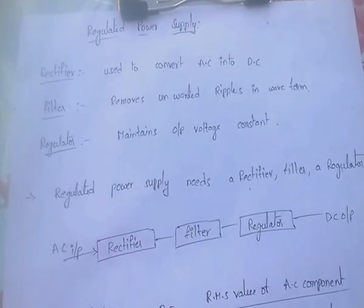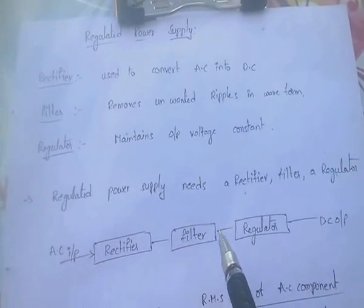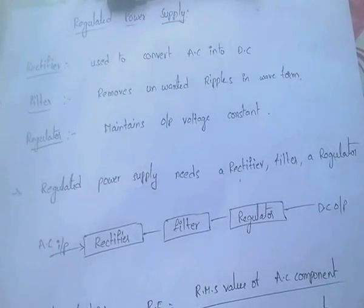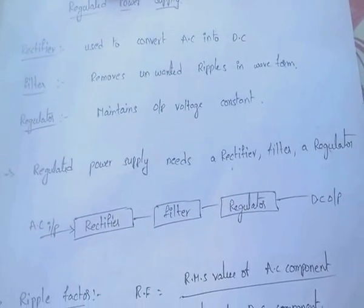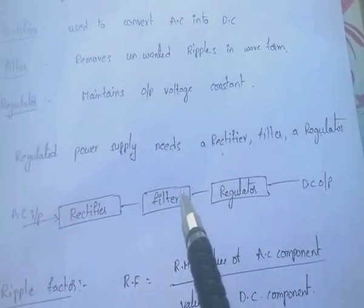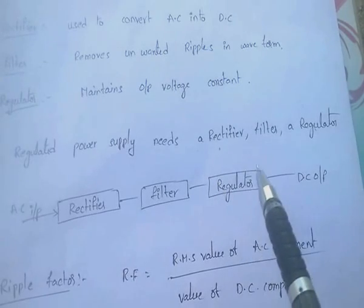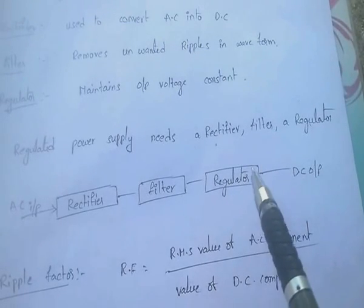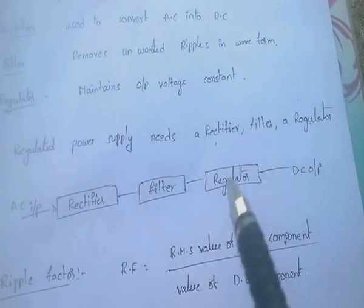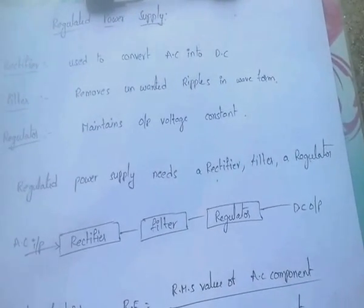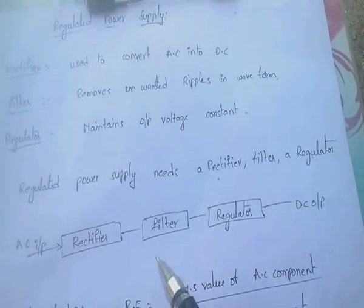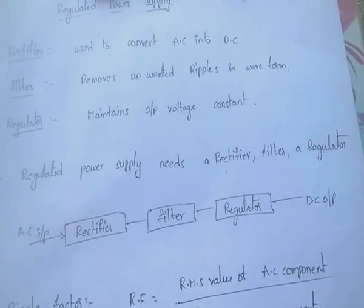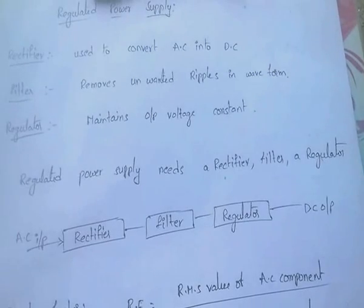The DC output is fed to the filter. The filter is a circuit which removes unwanted ripples in the waveform. The output of the filter is fed to the regulator. The regulator maintains voltage as constant. So if we give AC input to the regulated power supply, the output is constant DC voltage.